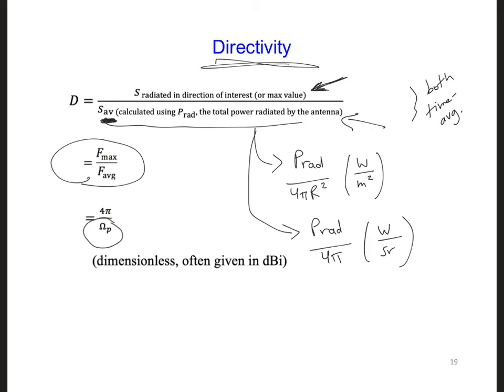Now, I say here that the quantity is dimensionless, and it's often given in terms of dBi. dBi means the dB level that is given is relative to an isotropic antenna. That's what the I stands for. What's the directivity of an isotropic antenna? An isotropic antenna has a directivity of 1 because s max in the numerator is going to be equal to s average in the denominator. So the smallest value that D can have is 1.